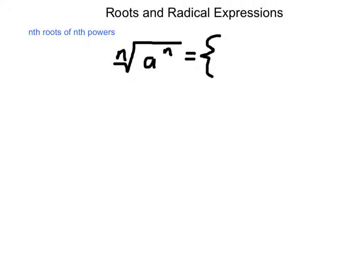If we have the nth root of a to the n, the first situation gives the value of a if n is an odd number — because raising a positive or negative to that odd power keeps the sign, and taking the root retains the sign. Or it has a value of the absolute value of a if n is even, because a negative raised to an even power becomes positive, so when we take the root it comes out positive. If it was positive to begin with, we retain it — so we say absolute value.